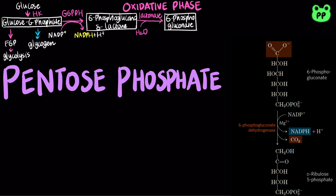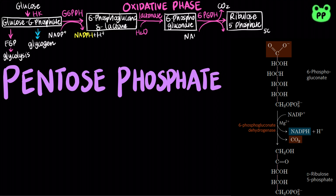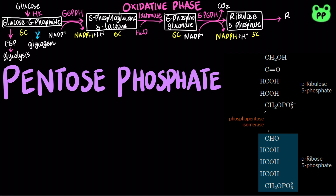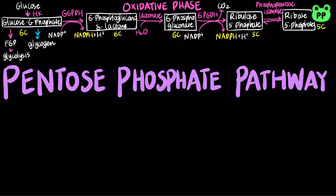Then, 6-phosphogluconate undergoes oxidation and decarboxylation by 6-phosphogluconate dehydrogenase, forming the ketopentose ribulose 5-phosphate. This reaction is also coupled to the reduction of NADP+ to NADPH. Next, phosphopentose isomerase converts ribulose 5-phosphate to its aldose isomer ribose 5-phosphate, which concludes the oxidative phase of the pentose phosphate pathway, converting glucose 6-phosphate to ribose 5-phosphate with a net production of 2 NADPH.